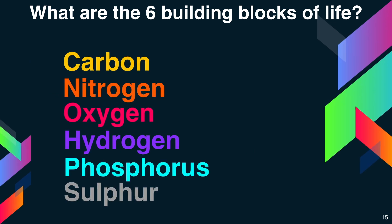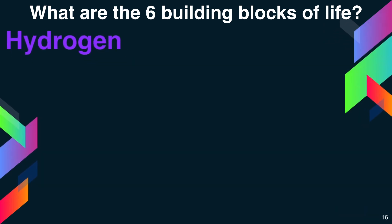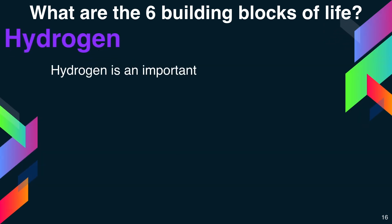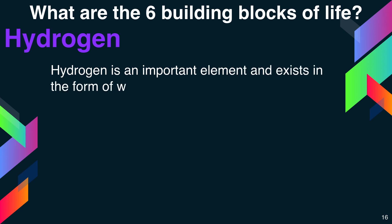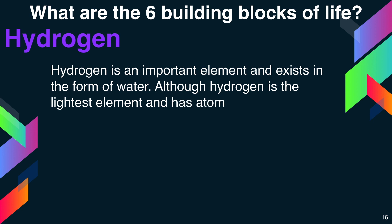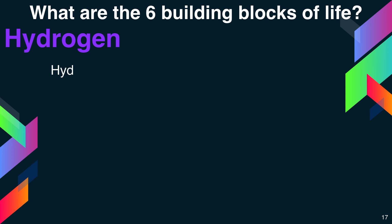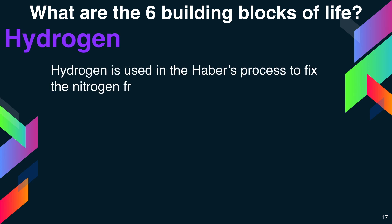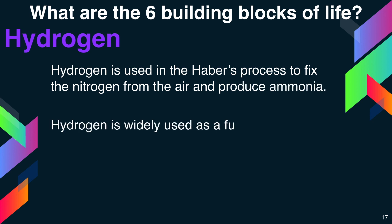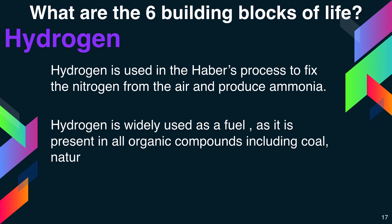Coming to the next element: hydrogen. Hydrogen is an important element and exists in the form of water. Although hydrogen is the lightest element and has atomic number one, it doesn't have the lowest melting and boiling points. Hydrogen is used in the Haber process to fix nitrogen from the air and produce ammonia. It is widely used as a fuel and is present in all organic compounds including coal, natural gas, and oil.